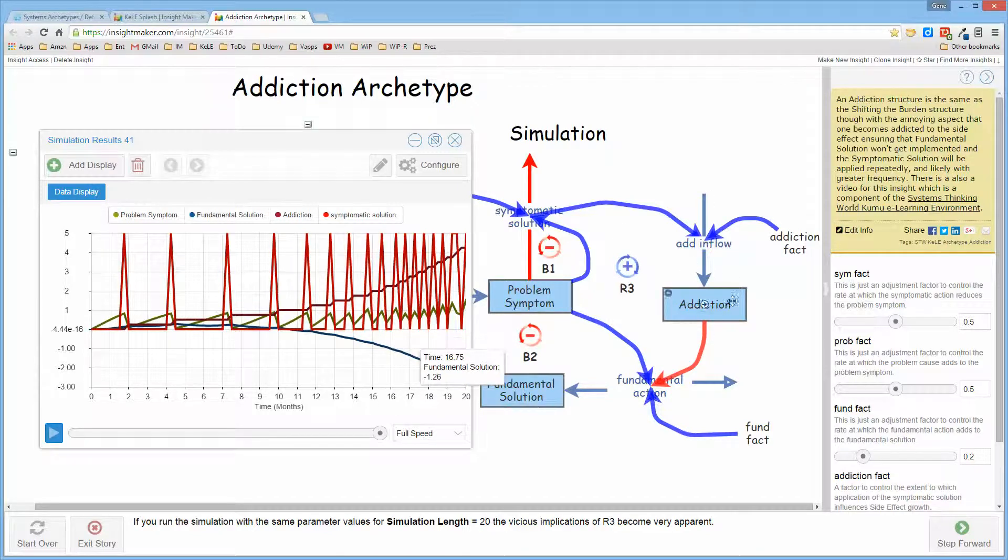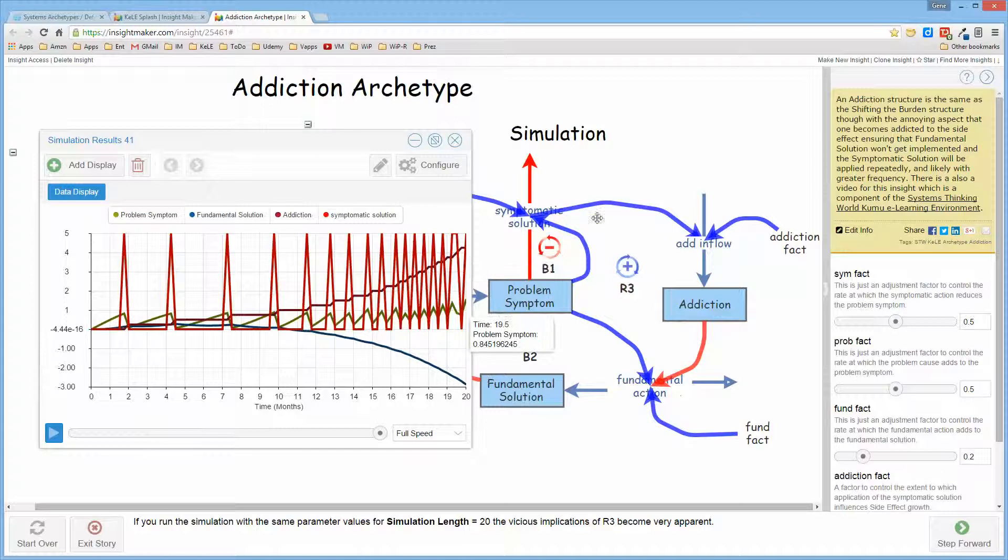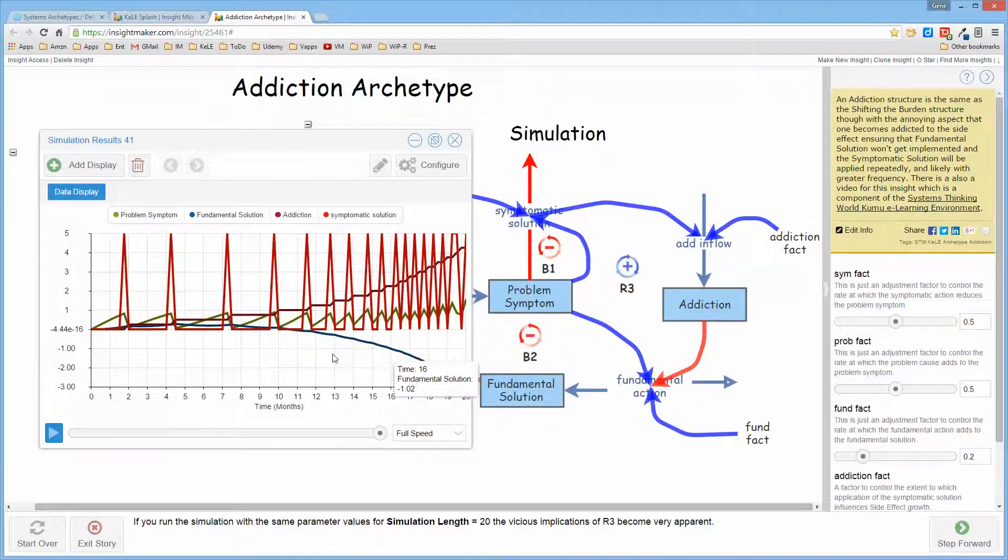which now begins to look like an exponential growth curve, which it should, because this is in fact a reinforcing loop, R3, so that the addiction is on an exponential growth curve.